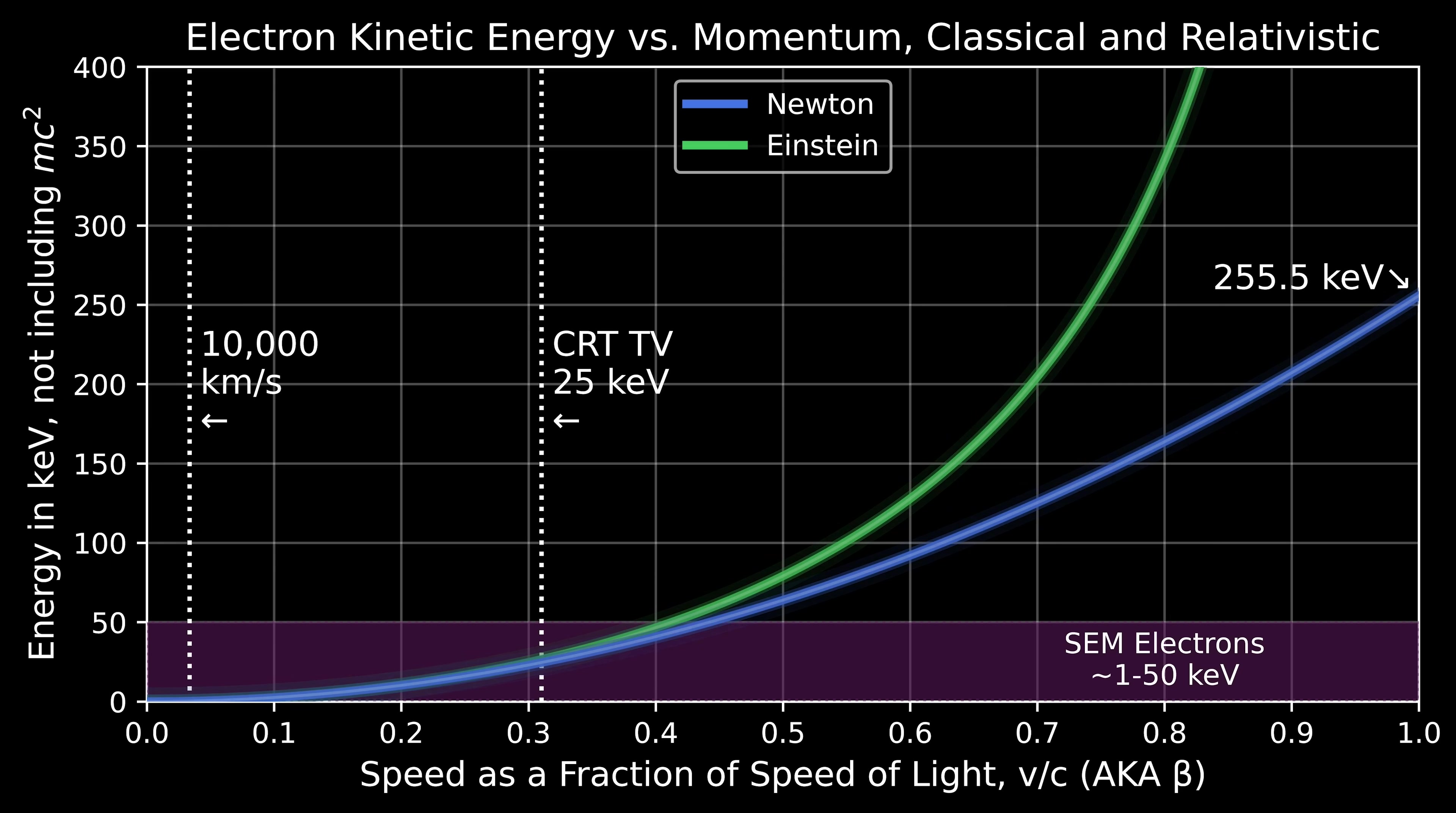On the y-axis I'm showing the energy of the electrons in keV. On the y-label, I have 'not including mc²'—that only matters for the relativistic equation. In the relativistic equation, the electron still has energy even when it's at rest (the energy mc²), but I've subtracted out that rest mass term so we can get a better comparison. I've put a few things in here for a sense of perspective.